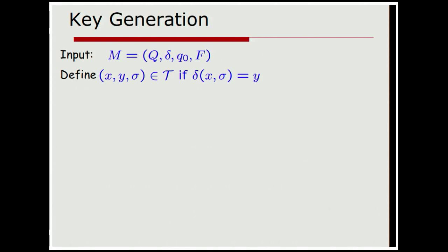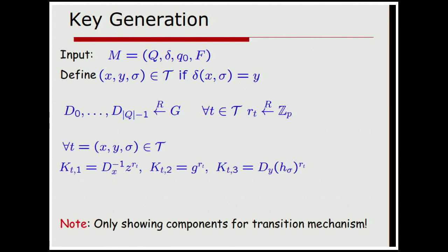For key generation, it's going to take as input a message m, the alphabet set for the whole system, sorry, it's going to take a DFA capital M, the alphabet set for the whole system and we're going to say X, Y, and sigma is in the set T if there's a transition from X to Y on symbol sigma. Again, we're going to choose, for each state in the system, we're going to choose a random group element and also choose a random exponent for each transition. Now, the part I want to get across here is that, let's see, is that there is, again, we are embedding somehow this transition from X to Y on symbol sigma in the keys. Like, we have this D sub X inverse and this D sub Y and H sigma to the R sub T. So, of course, there's not enough time to make complete sense of this, but I just want to give people a sense that, you know, it is, you know, we are embedding this DFA in there somehow.